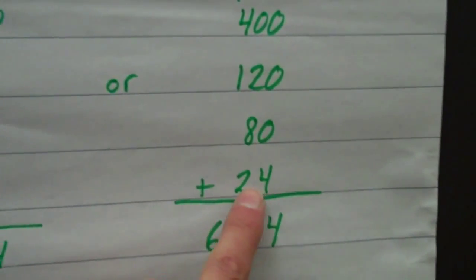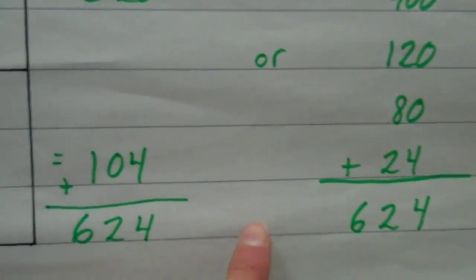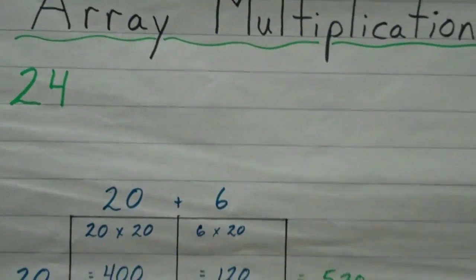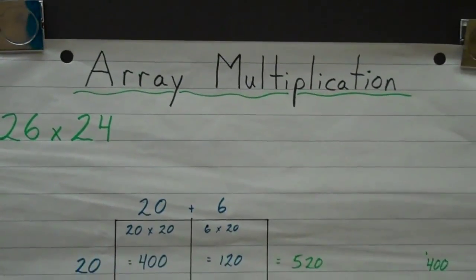So, I have shown two different ways to check my work to make sure that I have the correct answer. And that is array multiplication. Thank you.